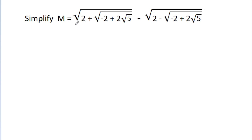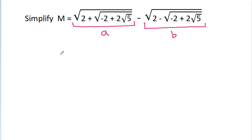We have to simplify m = √(2 + √(-2 + 2√5)) - √(2 - √(-2 + 2√5)). If we take the first term as a and the second as b, then m will be equal to a minus b, where a is the square root of 2 plus something and b is the square root of 2 minus something.